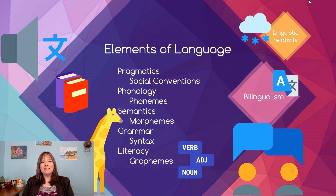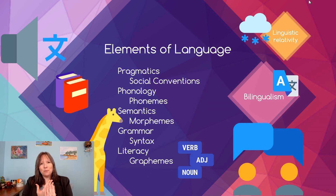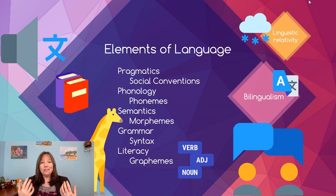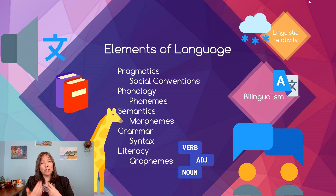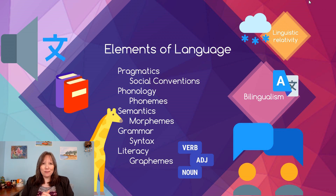One of the areas is pragmatics. Pragmatics is the social conventions — the idea of how close together do you stand when you talk? Are you a close talker? Do you talk with your hands? What types of gestures are appropriate or inappropriate? Are there certain tones or phrases that are inappropriate? How do you keep a conversation going back and forth, or shut a conversation down? All the social conventions about how you use language is pragmatics.